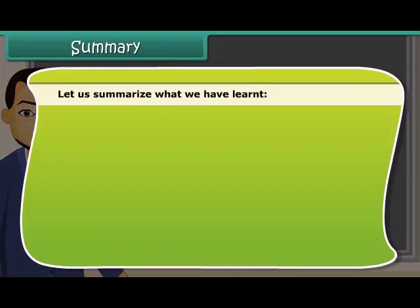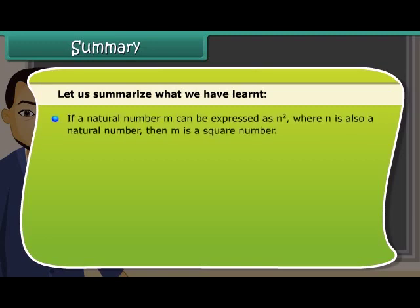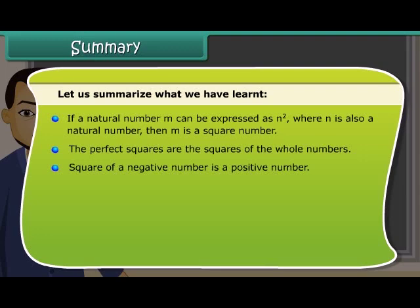Let us summarize what we have learned. If a natural number M can be expressed as N square where N is also a natural number, then M is a square number. The perfect squares are the squares of the whole numbers. Square of a negative number is a positive number. Square root is an inverse operation of squaring.